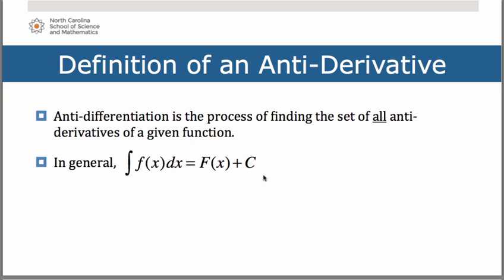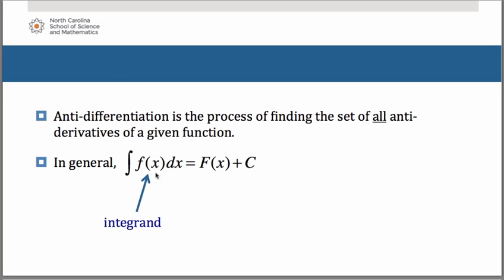Let's dissect the different parts of this. f of x is what we refer to as the integrand. Think of another term you have learned in mathematics — the radicand, which is the number underneath a radical symbol, a square root symbol for instance. The number you are taking the root of is what we always called the radicand.